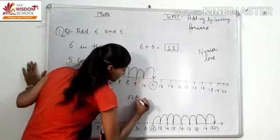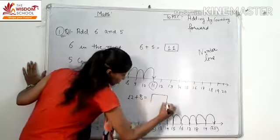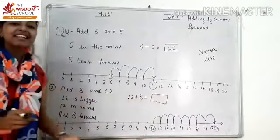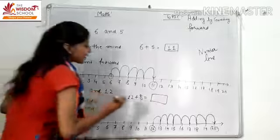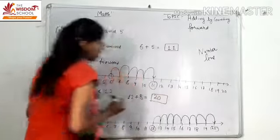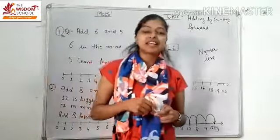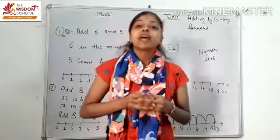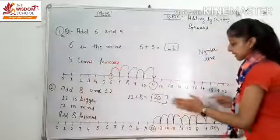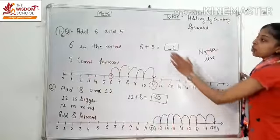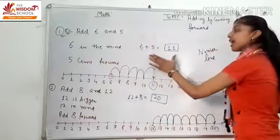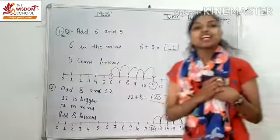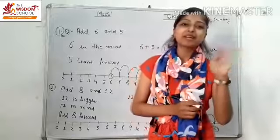It means twelve plus eight is twenty. I hope students, you have understood today's lecture well. Today we learned to draw a number line and add two numbers. Thanks for watching. Bye-bye to all of you.